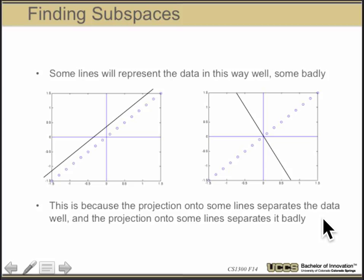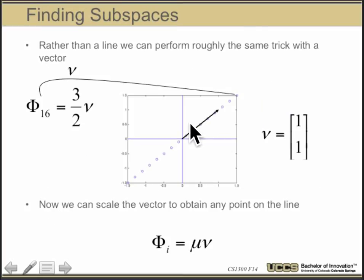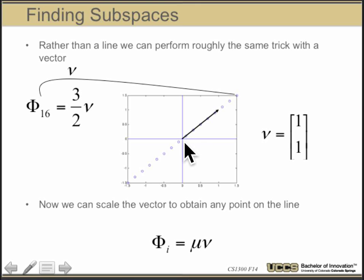After I have a line, I can also think about doing this with a vector, because vectors and lines have a lot of relations. Given some vector, I can project everything onto it. Once I've projected onto the vector, the coefficients tell me how to scale the vector to obtain any point on the line — I project points onto the vector and the infinite part of it — and then I can represent every point. That gives us a way of looking at the subspace.